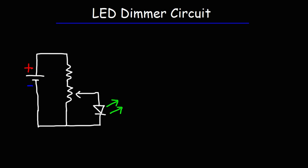In this video, we're going to talk about how to make a LED dimmer circuit. So what we're going to use is a 9-volt battery. We have our current limiting resistor, RS, and R is a variable resistor known as a potentiometer.